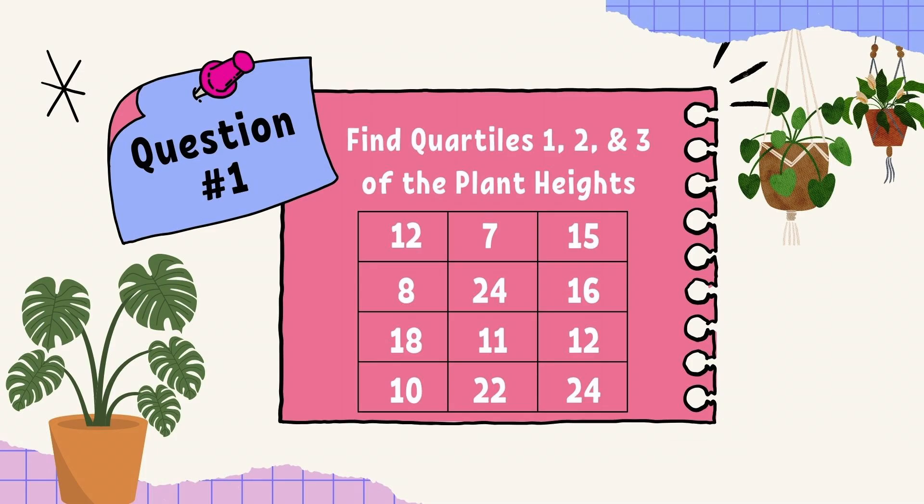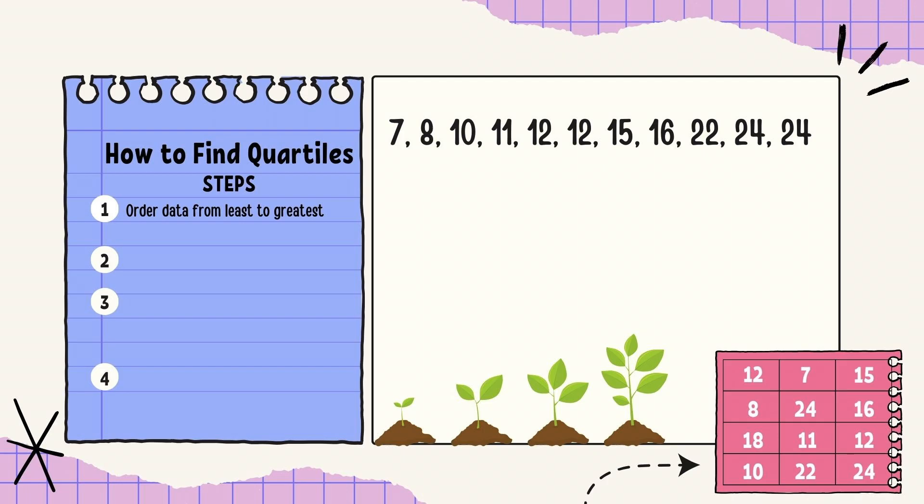Let's get started with question one. Find the quartiles 1, 2, and 3 of these given plant heights. Step 1, we're going to order the data from least to greatest. So I have 7, 8, 10, 11, 12, 12, 15, 16, 22, 24, 24. It's okay that I have multiple of the same numbers. For example, I have two 12s and two 24s. Even though they repeat, I need to include all of them.